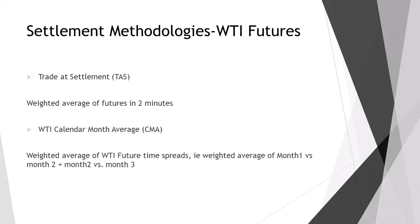Moving on, we have WTI Futures, which is the world's most liquid futures contract. The main difference between Brent and WTI is that WTI is physically delivered. The expiry price is therefore just a physical price at which people are ultimately happy to buy or sell. That said, there is still trade at settlement on a daily basis, similar to Brent, and it is assessed by the weighted average of the futures trades in the two minutes at the end of every trading day.